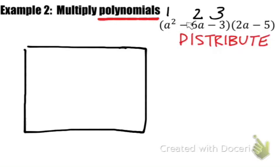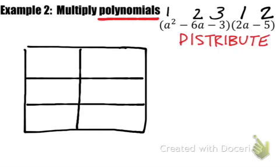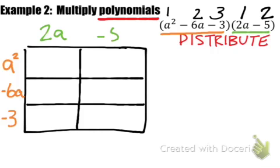Since we have 1, 2, and 3 terms in the first polynomial, I'm going to make three rows in my box. Then I look at my second polynomial — I'm going to label them 1 and 2. Since my second polynomial had two terms, I'm going to make two columns. Down the line, I'll write the terms of my first polynomial in orange: a squared, negative 6a, and negative 3. Across the top, I'll write the two terms of my second polynomial: 2a and negative 5.